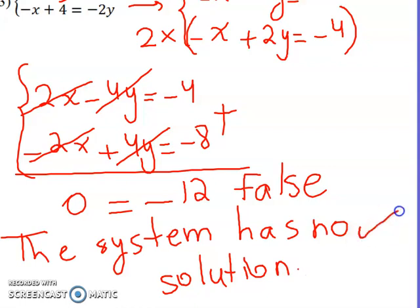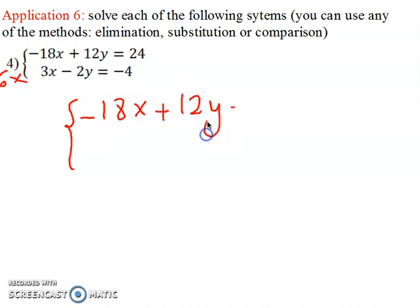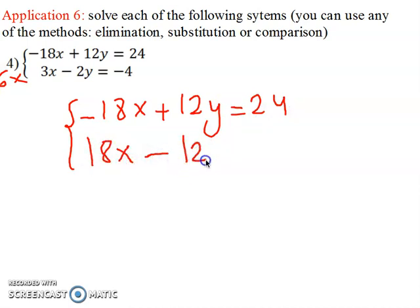It is necessary to finish the answer with this conclusion statement, because the question asks you to solve — meaning you must give a final result: whether you found a solution or not. For the last part, we multiply the second equation by six, giving minus 18x plus 12y. The first equation stays as 18x minus 12y equal minus 24.